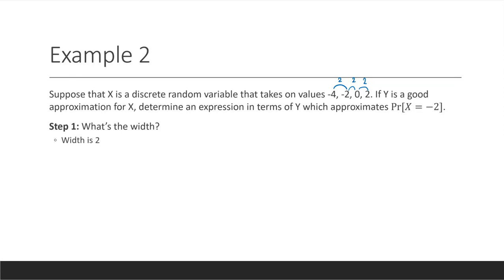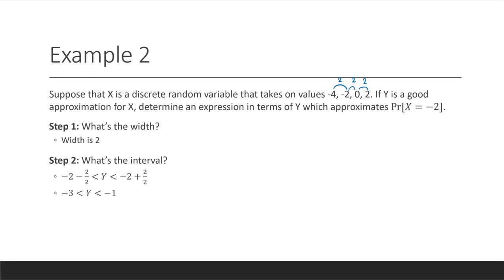So what is our interval for this particular question? We're looking at the probability that x is negative 2, so we want the interval of width 2 centered at negative 2. To find that interval, we go 2 over 2 to the left of negative 2, and 2 over 2 to the right of negative 2. When we simplify this, it gives y is greater than negative 3 and less than negative 1. Notice that negative 2 is right at the center of the interval from negative 3 to negative 1, and that interval has width 2. So our answer is: the probability that x is negative 2 is approximately the probability that y is between negative 3 and negative 1.